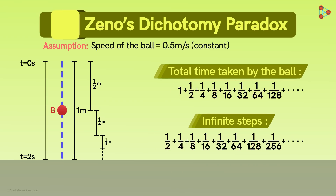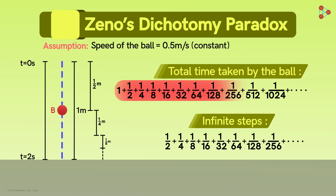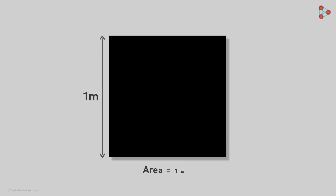This is an important concept — it's getting closer to a definite number, but remember, it will not be zero. Each step requires some time, however negligible it may be. We know that the ball takes two seconds to reach the floor. We can show that if we add all the values of time taken by the ball to perform each step, the sum will never exceed two and will actually be equal to two. Before we prove this, let me give you another example. Consider a square where the length of each side is one meter, so its area will be one square meter.